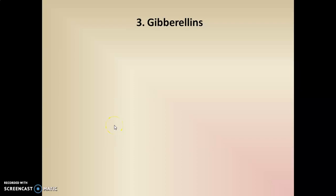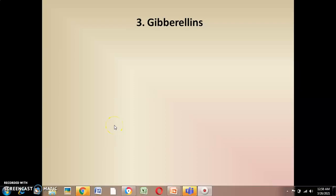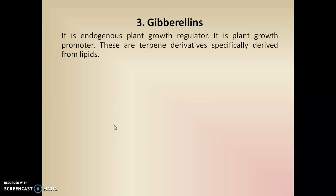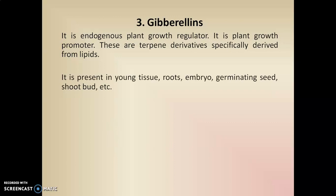The third plant hormone is gibberellin, which is an endogenous plant growth regulator. It is also a plant growth promoter that promotes the growth of the plant, and it is generally a terpene derivative, specifically derived from lipids. So this is one of the endogenous plant growth hormones or regulators.